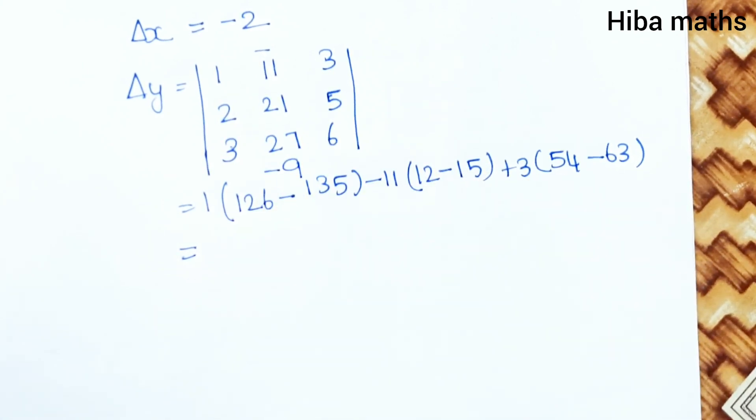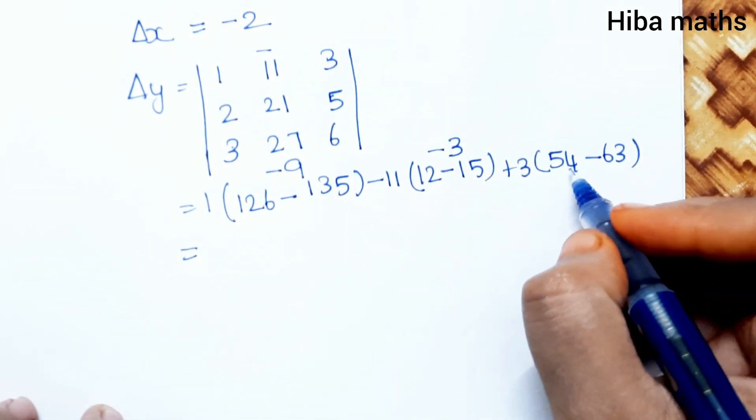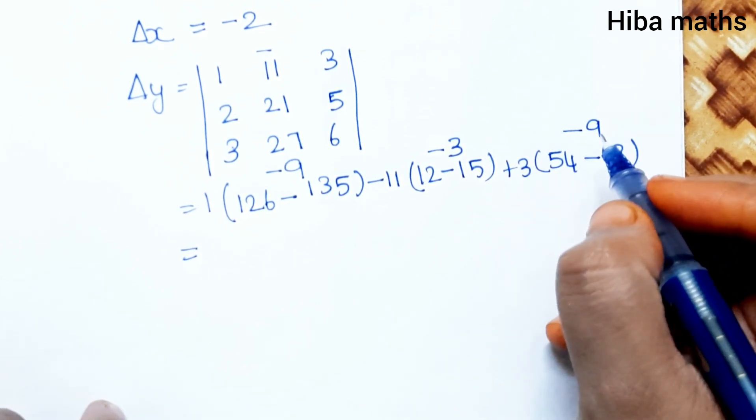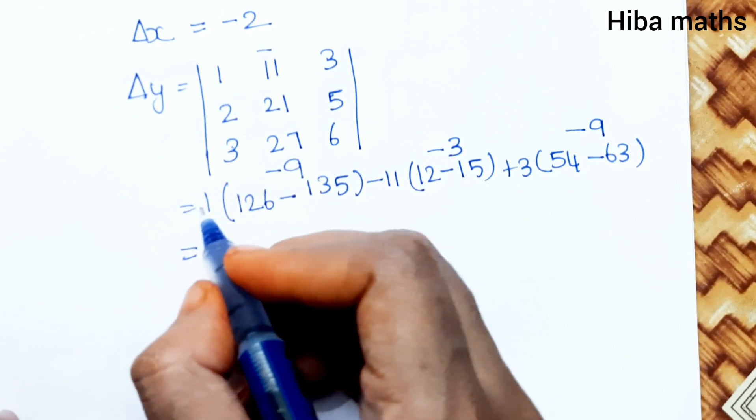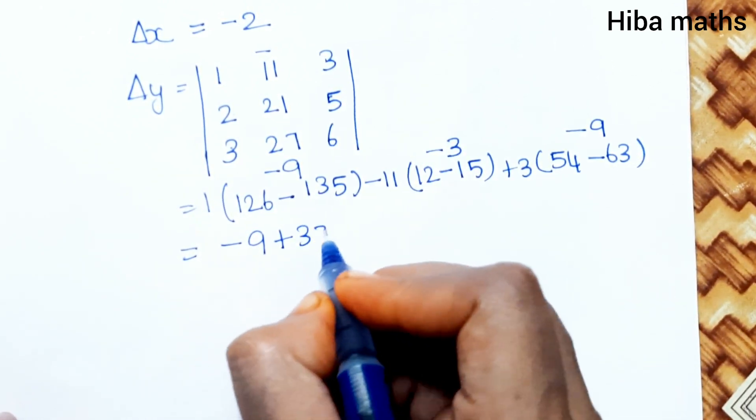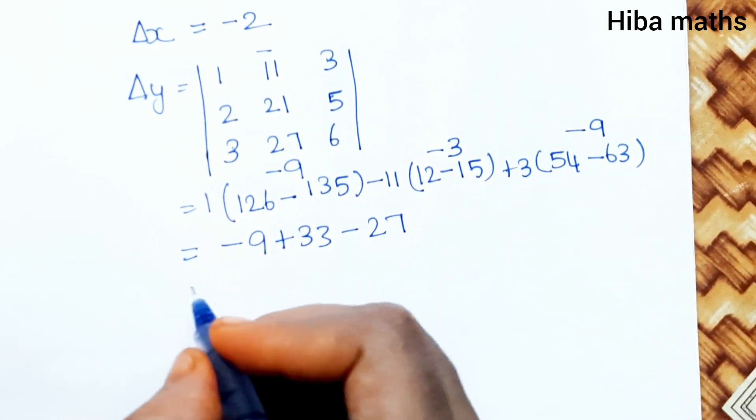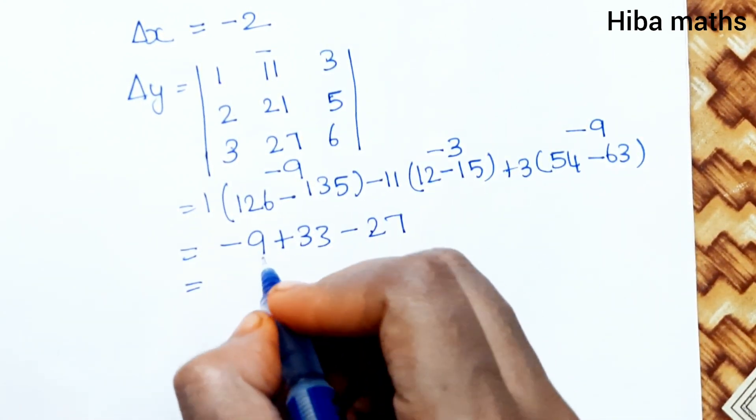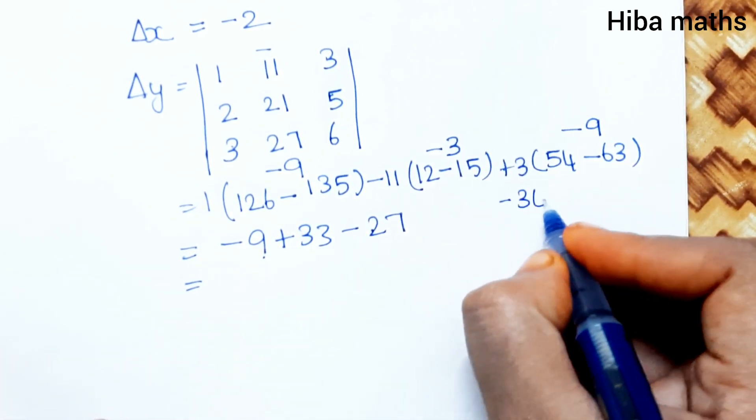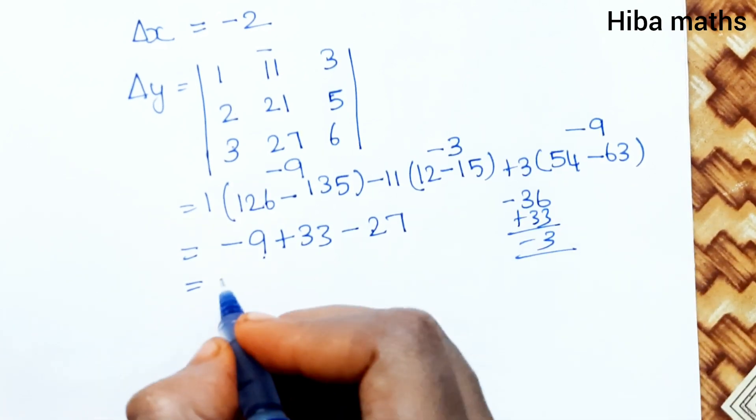Solving: -9 + 33 - 27 = -3. So del Y equals -3.